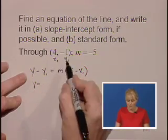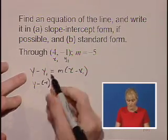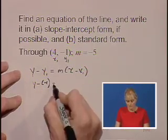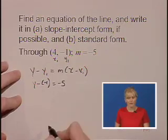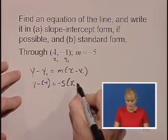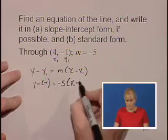So we'll have y minus y1, which is -1, so watch your signs, equals m which is -5, times x minus x1, which is 4.